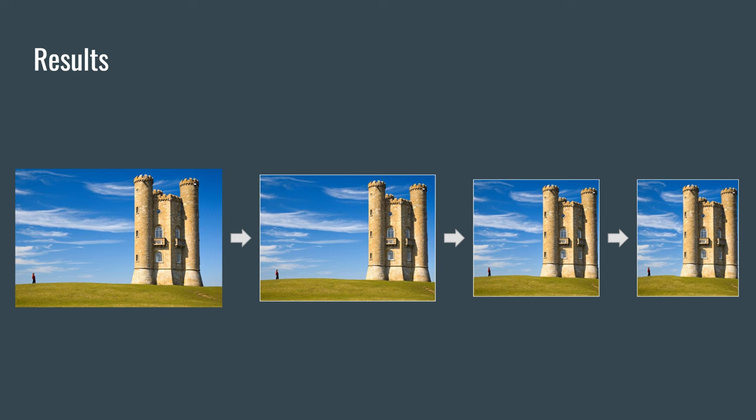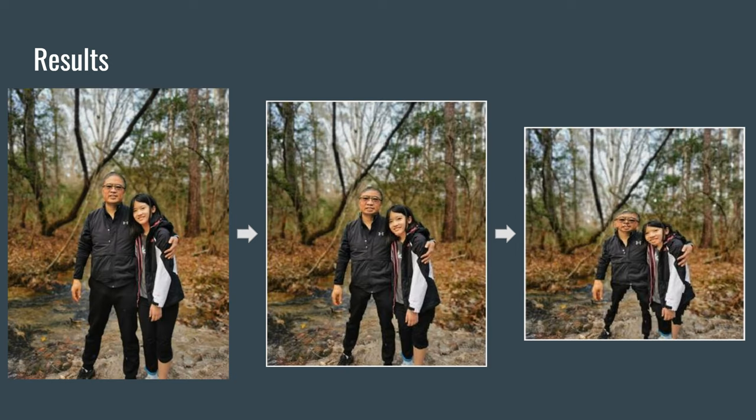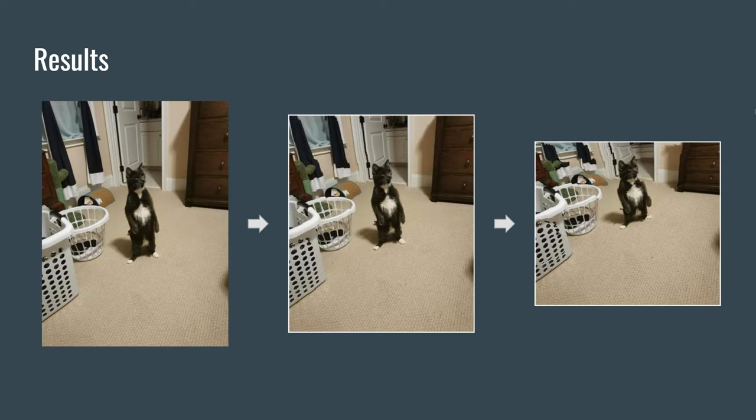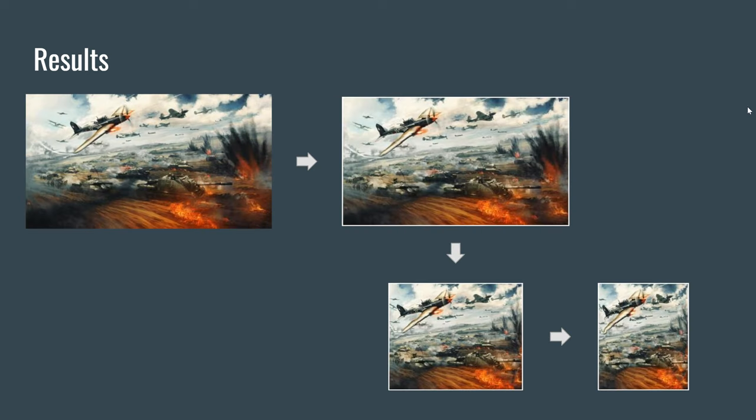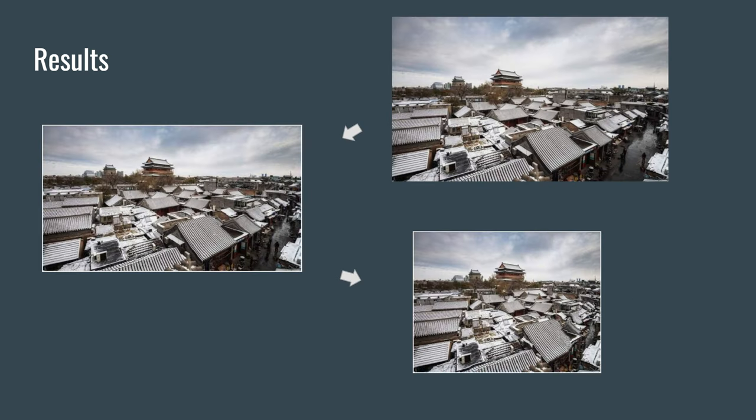Here are some results. This is the image from the assignment sheet. This is an image I took of my dad and my little sister. This is my cat. And this is also an image where I think entropy works better — this is a game that I really like. And this is an image of Beijing that I found online.